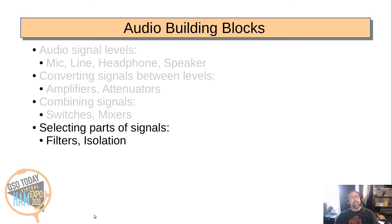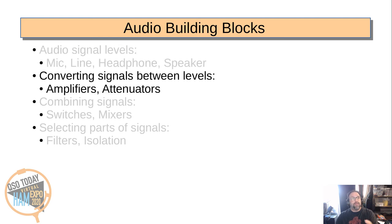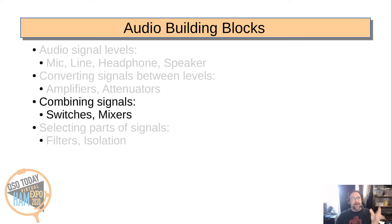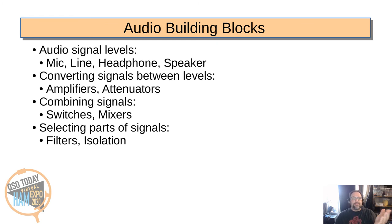So let's summarize what we've talked about. We've got the different audio signal levels: microphone, line, headphone, and speaker. We've learned how to convert signals between those levels using amplifiers and attenuators. We've learned how to combine signals — either using switches one at a time, or mixers with all of them at the same time. And we've figured out how to select different parts of the signal using filters, with isolation — removing DC or disconnecting grounds — as a key use case.